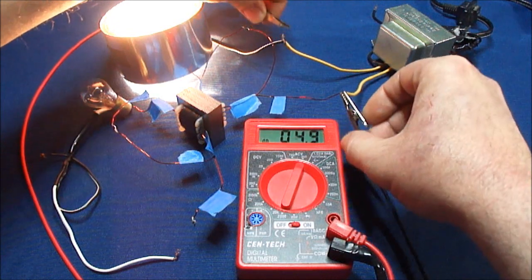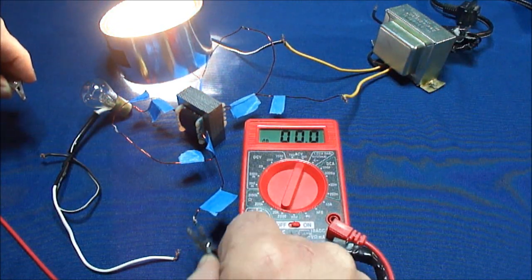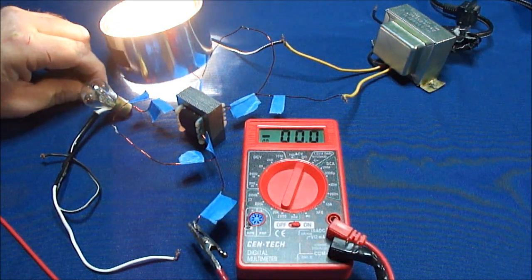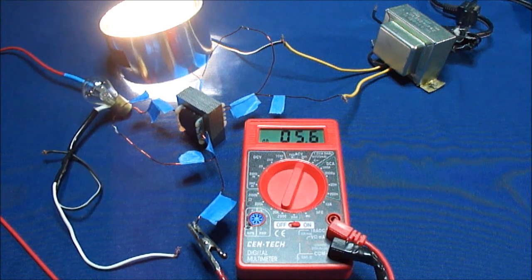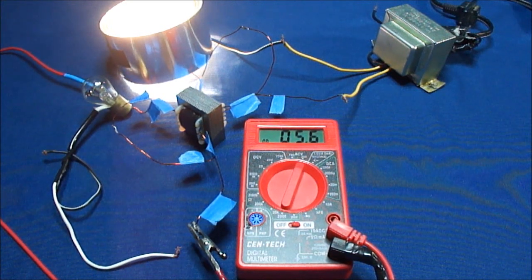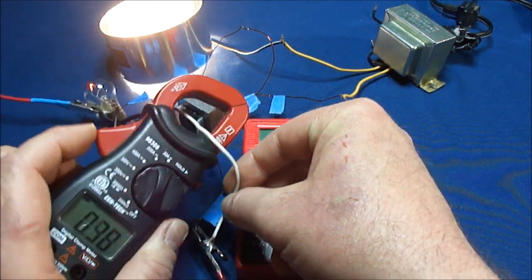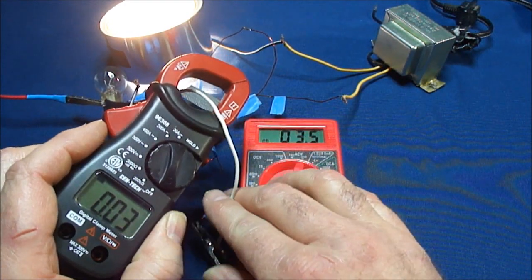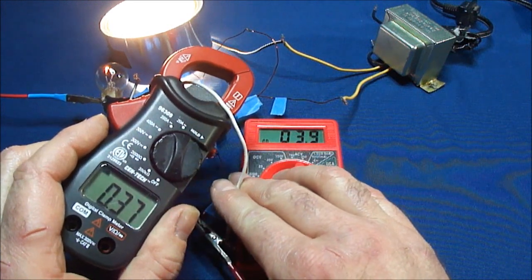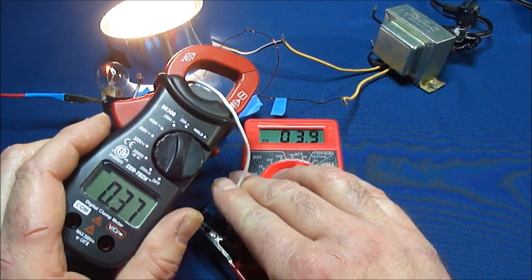Show you what we have in the secondary. The voltage is holding in the secondary about 5.6 volts. You are getting about 370 milliamps.